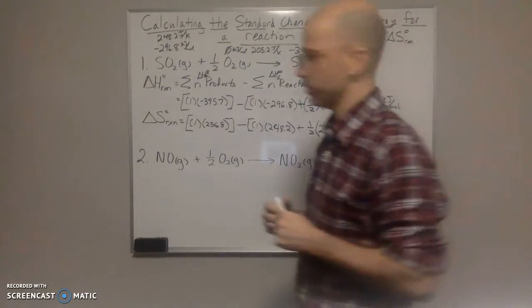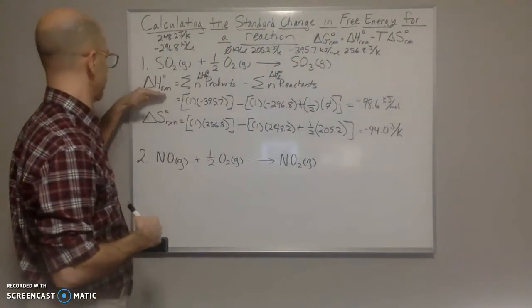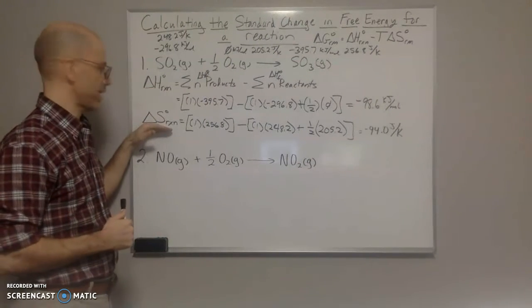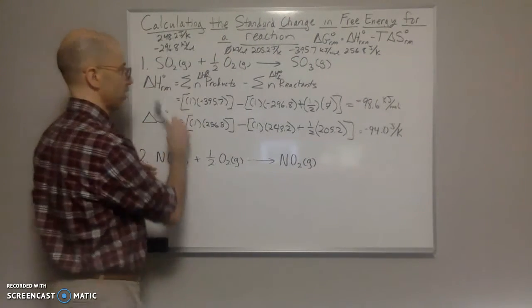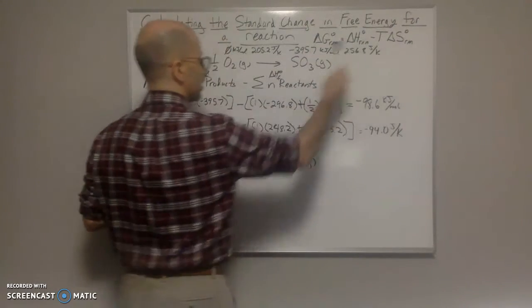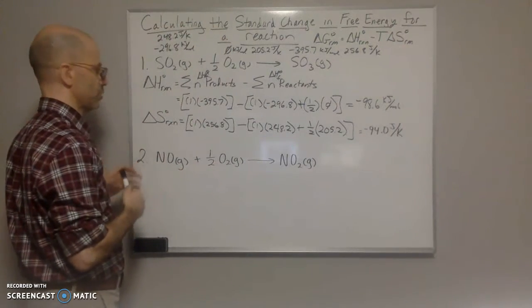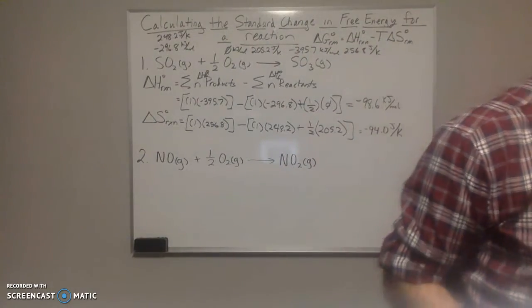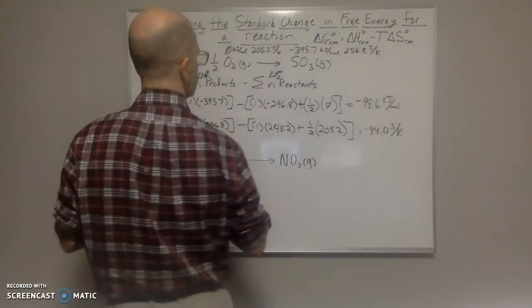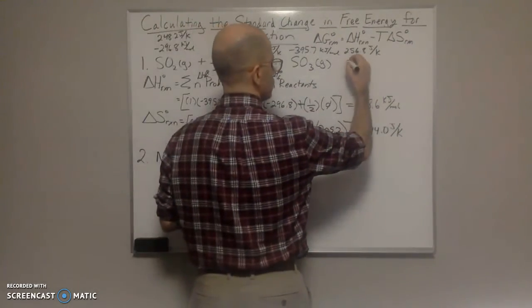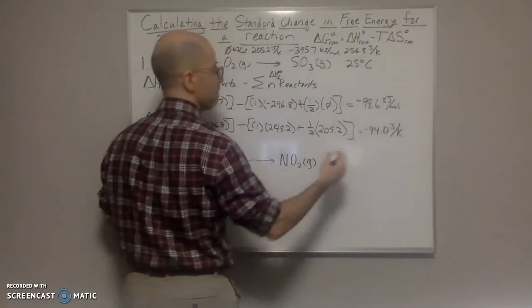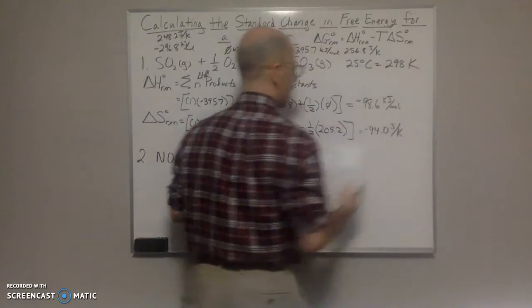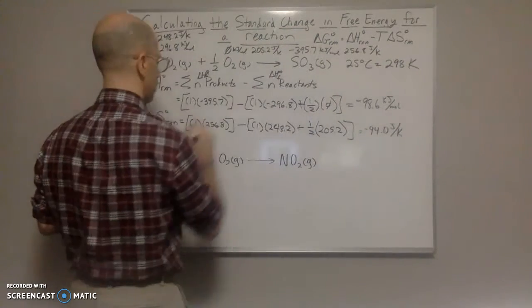At this point, once you've got your delta H of the reaction and your standard entropy of the reaction, you can plug these two into the equation with the temperature. The temperature we have is 25 degrees Celsius, which is equal to 298 Kelvin.